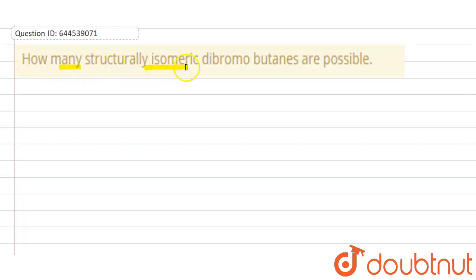how many structurally isomeric dibromo butanes are possible? So when you write the formula of dibromo butane, it is C4